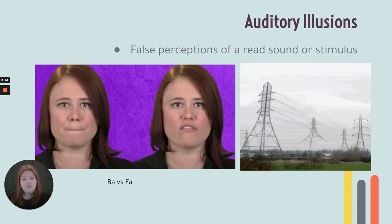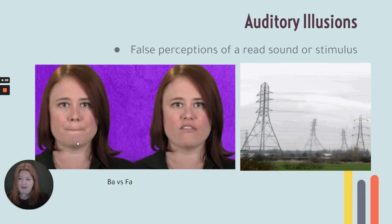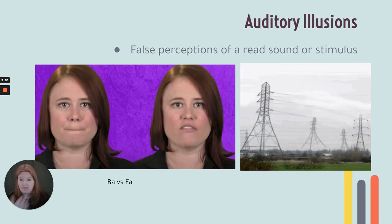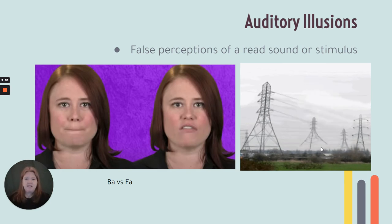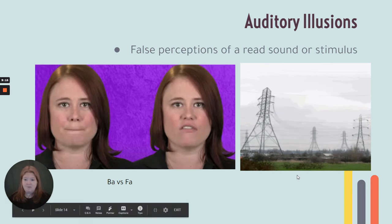There are auditory illusions too. In the video, she's making the same sound — 'bah' — but this looks like 'fa.' You hear 'bah' when you close your eyes, but when you watch her mouth make the 'fa' shape, even though the sound says 'bah,' you hear 'fa.' Cover your eyes and you hear 'bah'; look at the picture and you hear 'fa.' Strange. And this one — some people are able to hear a sound when something lands on the ground. There is no sound — it's an auditory illusion.